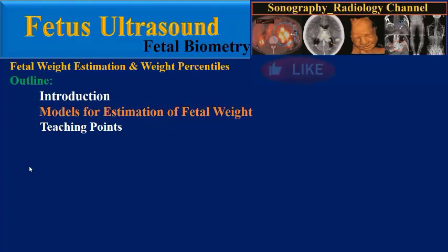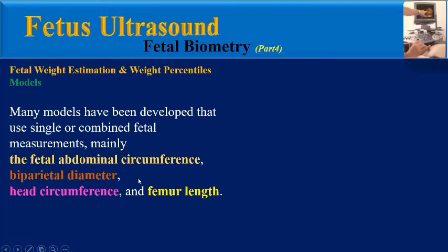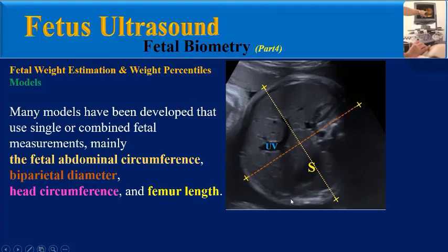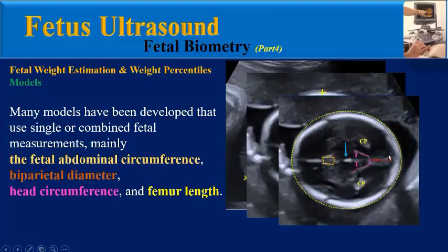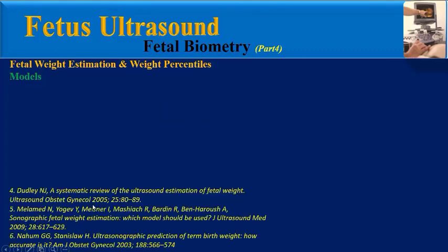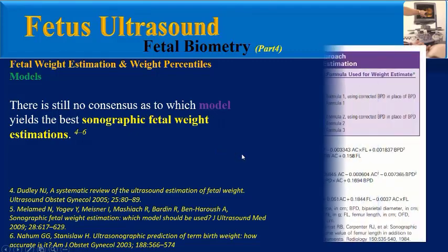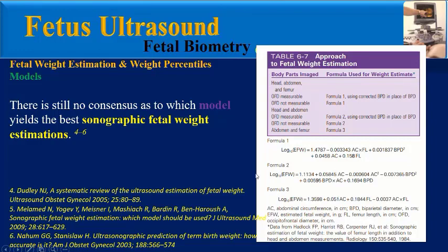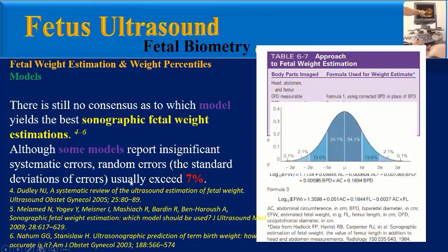Many models have been developed that use single or combined fetal measurements, mainly the fetal abdominal circumference, biparietal diameter, head circumference, and femoral length. According to many studies, there is still no consensus as to which model yields the best sonographic fetal weight estimation.